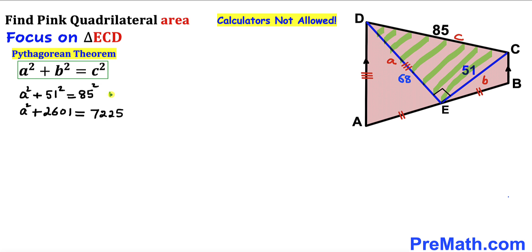In this next step I have substituted these b and c values in this formula. We are ended up with a squared plus 2601 equals 7225. Let's subtract 2601 from both sides. This is gone and when we subtract this one, a squared turns out to be 4624.